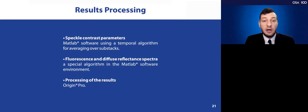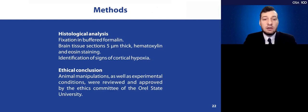For the histological analysis, we fixed the brain in buffered formalin, made the brain tissue sections stained with hematoxylin and eosin, and identified the signs of cortical hypoxia. For the ethical considerations, we say that all the animal manipulations and experimental conditions were reviewed and approved by the Ethical Committee of Ryazan State University.